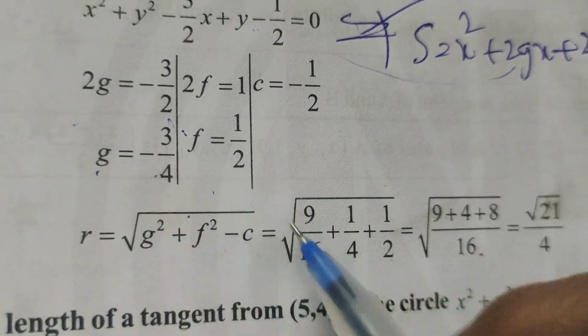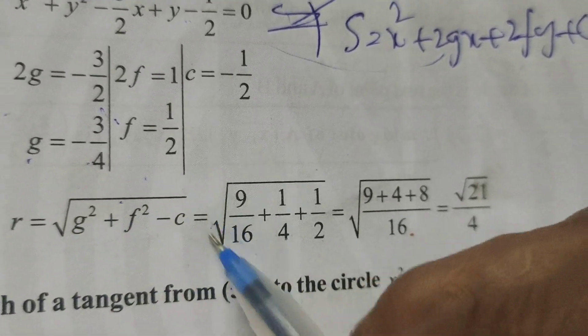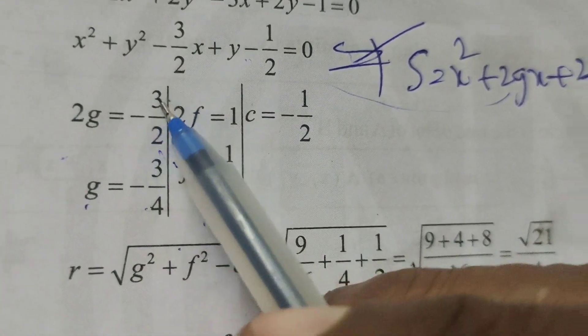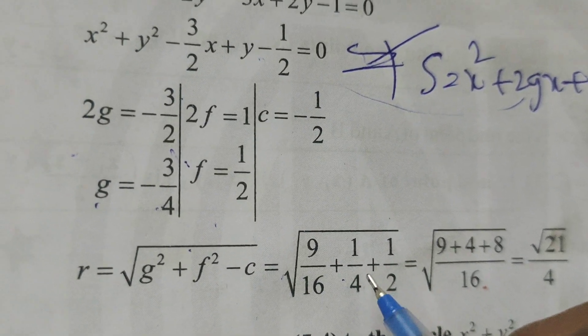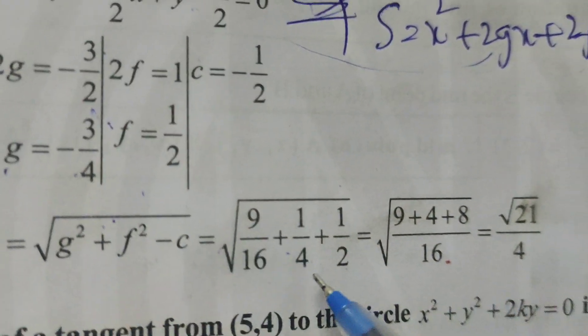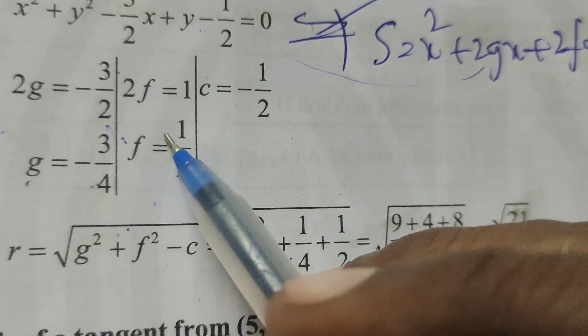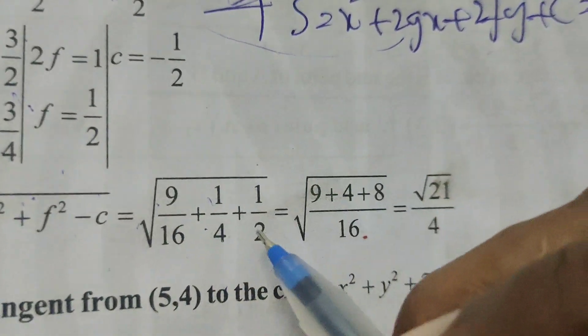r equals to formula, square root of g square plus f square minus c. Therefore, root of, substitute these values, minus 3 by 4 whole square, that is 9 by 16, plus 1 by 2 whole square, 1 by 4, plus minus 1 by 2, that is plus 1 by 2.